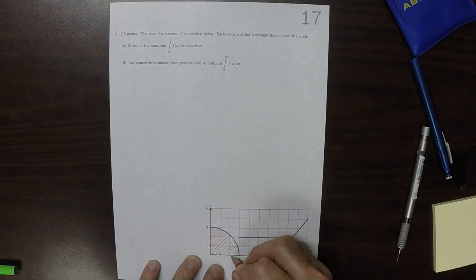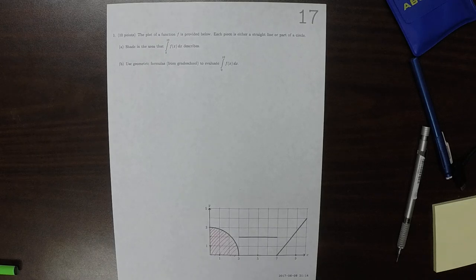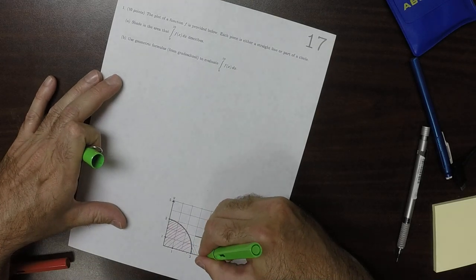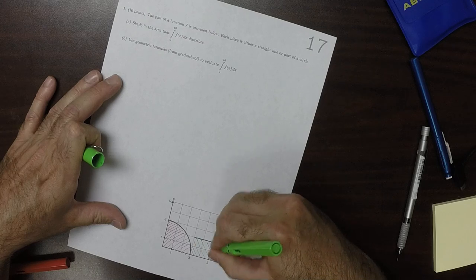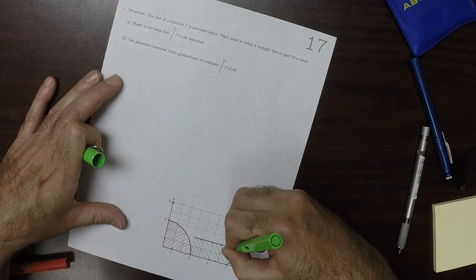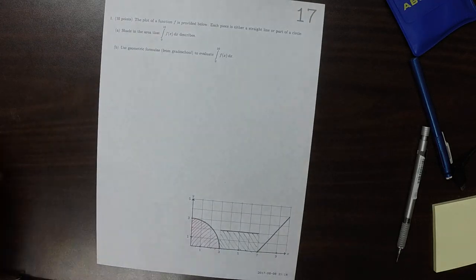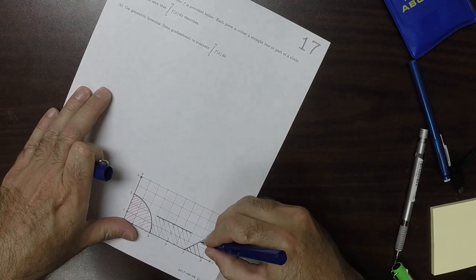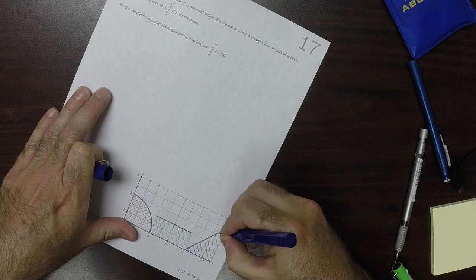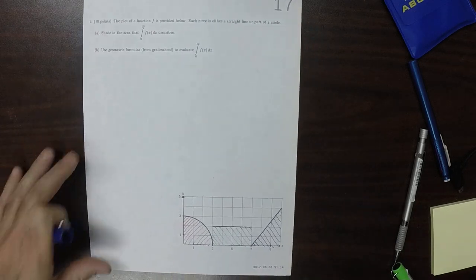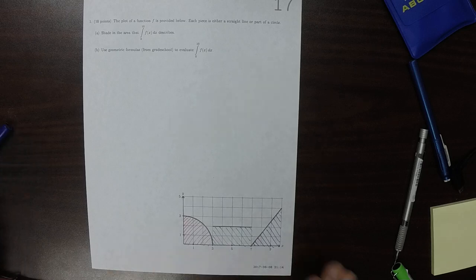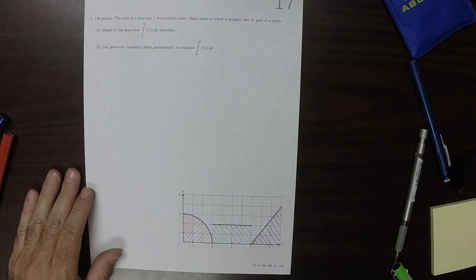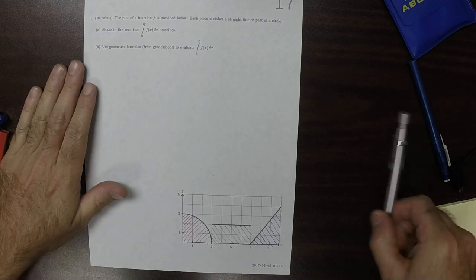It's talking about that much, plus that much, plus that much. So that's all the area, and I colored it in three different shades because there's three different shapes involved.